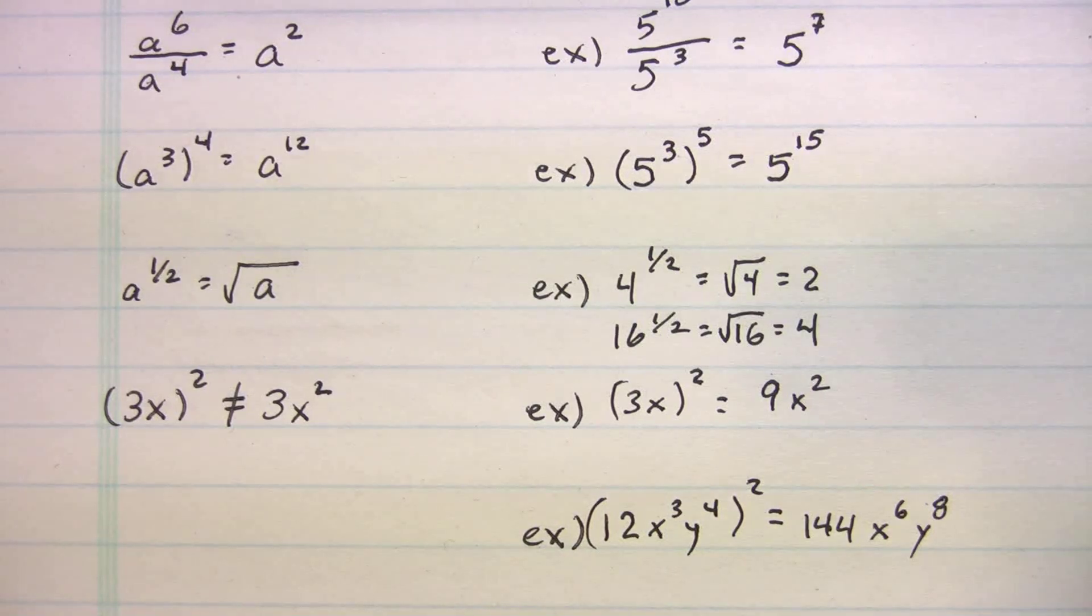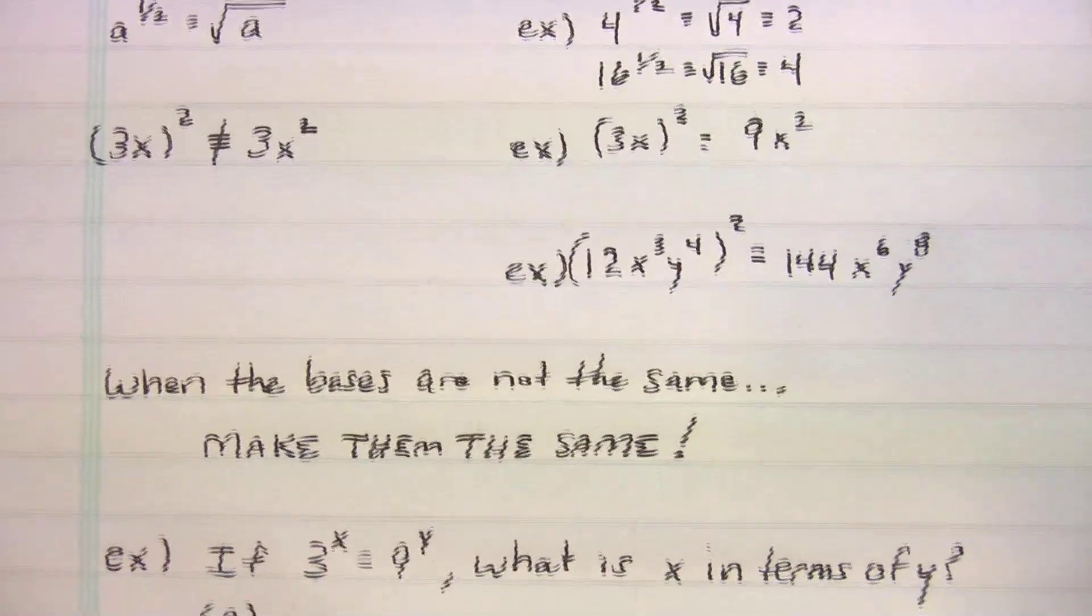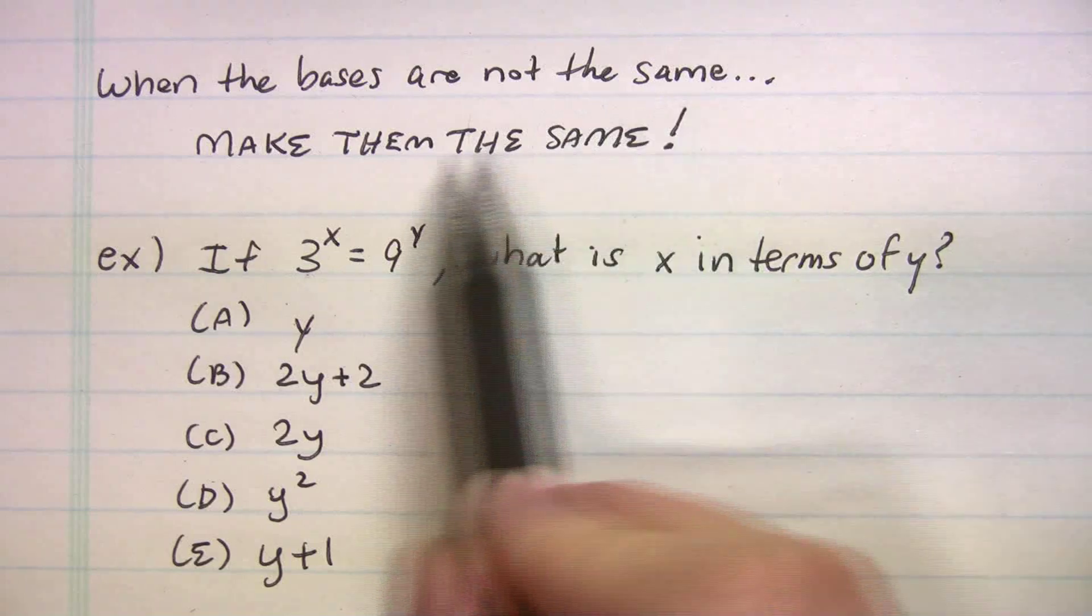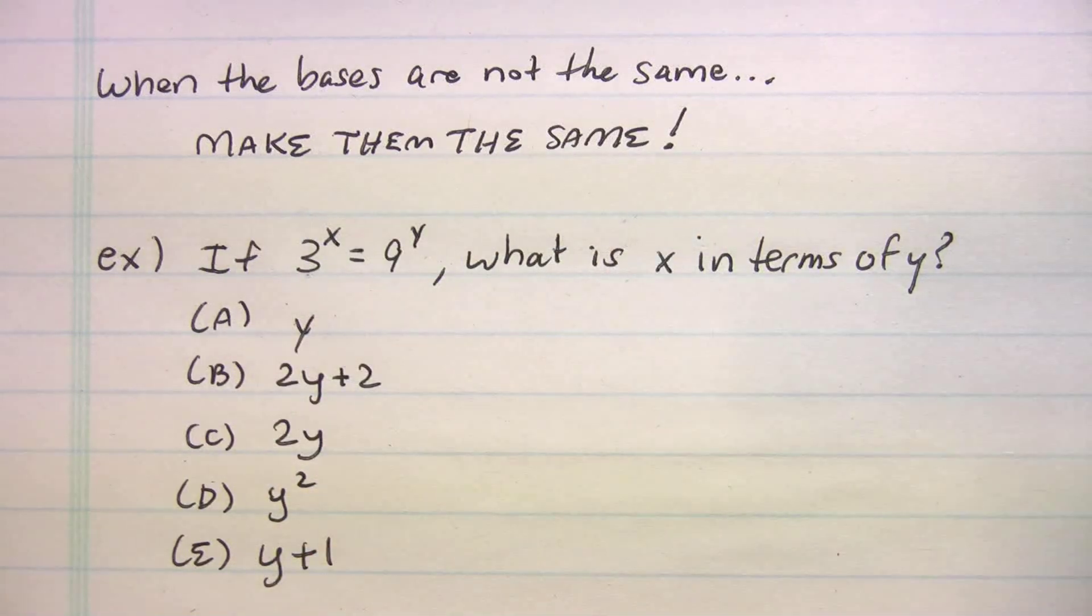So far we talked about what happens when the bases are equal. Well, the SAT, they're not going to be so nice, right? They're not always going to give you equal bases. So what do you do? When the bases are not the same, make them the same. Now, how do we do that?